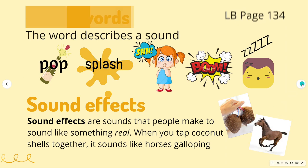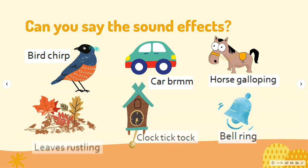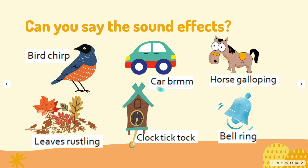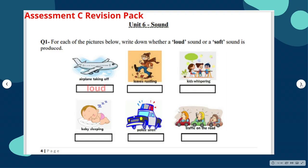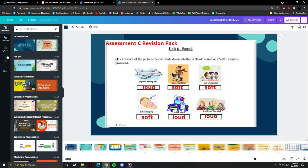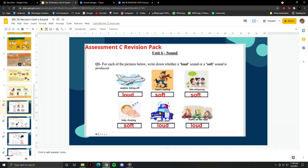Can you say the sound effects of a bird chirp, car broom, horse galloping, leaves rustling, cluck, tick tock, and bell ring? Remember, some sources of sound make very loud sounds and we can hear them from far away. Some sounds are quieter or softer and we cannot hear them from far away.